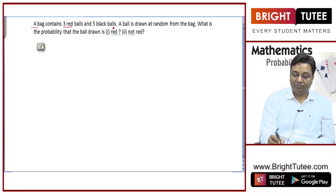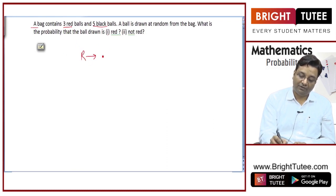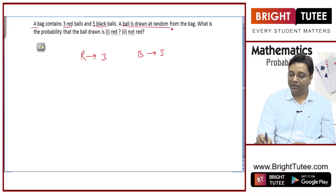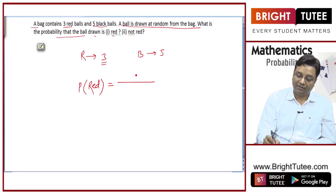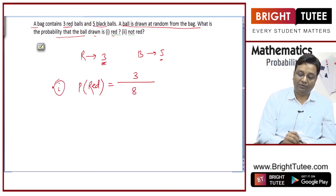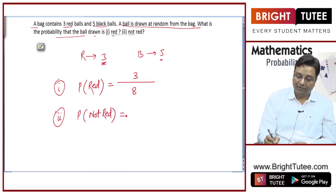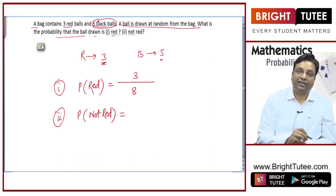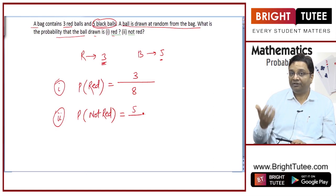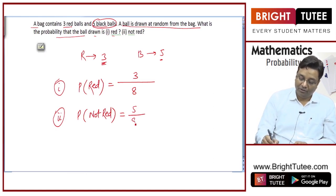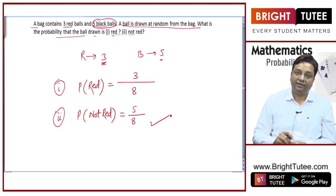A bag contains 3 red balls and 5 black balls. A ball is drawn at random — what is the probability that the ball drawn is red? The probability of getting a red ball is 3 (favorable cases) divided by 8 (total outcomes), giving 3/8. What is the probability the ball is not red? That means the ball is black: there are 5 black balls, so the probability is 5/8.